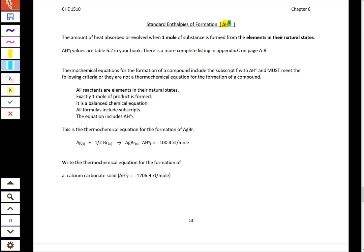Now, the thing that's going to change here is we also have this little subscripted F. That subscriptive F is the F for formation. This is the amount of heat absorbed or evolved, which means given off, when one mole of substance is formed from their elements and their natural states.